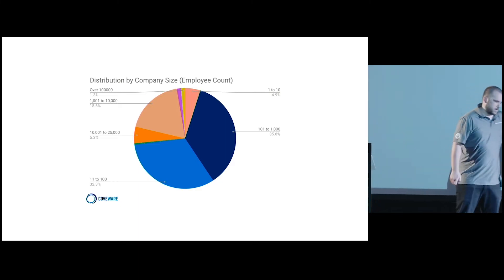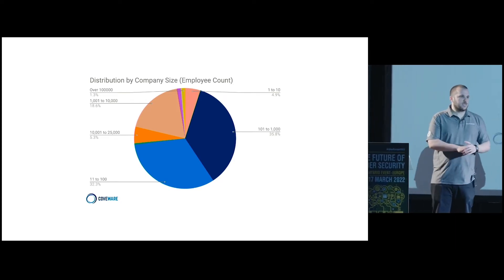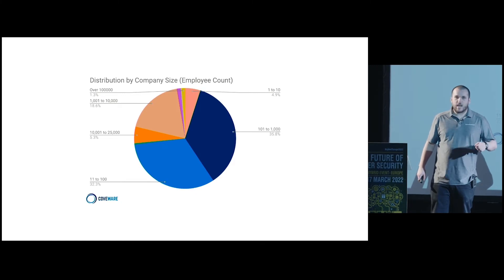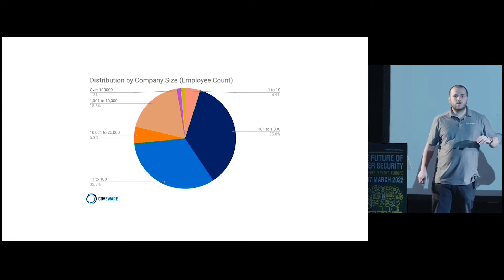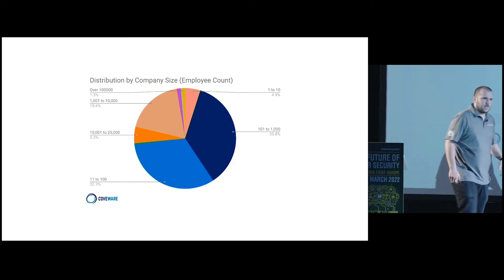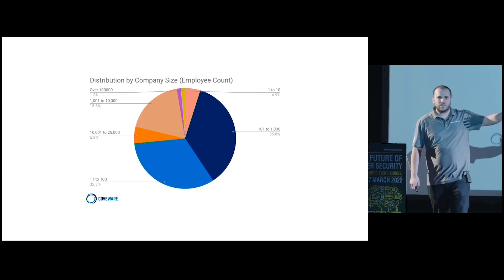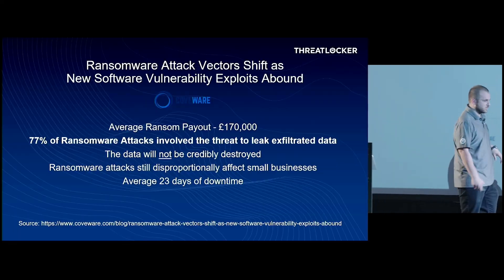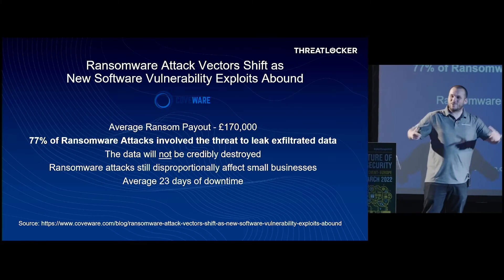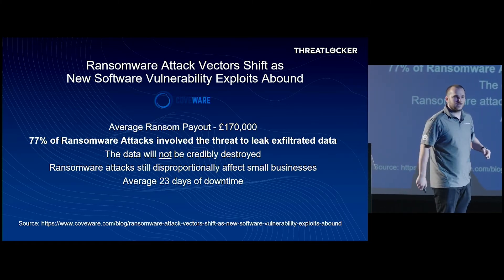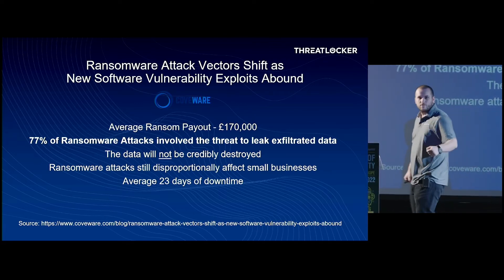I really like this slide — it's by a company called Coveware. Essentially it says that 70% of ransomware attacks are occurring to businesses of 10 to 1,000 employees, and 32% of attacks are actually happening to 11 to 100 employee-sized companies. So this isn't just big companies they're going for — it is also small and medium businesses. And these attackers are going after your data because they've realized you've more than likely got backups. 77% of those attacks are threatening to leak your data on the dark web.